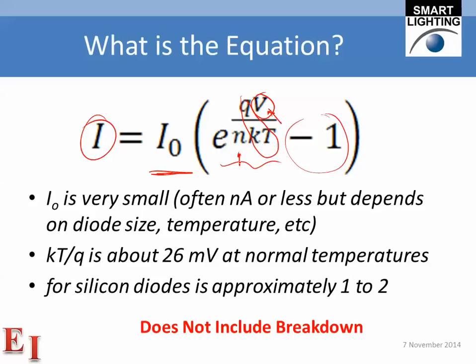The ideality factor n depends on the material; for silicon diodes it's approximately 1 to 2. Normally when you make a measurement of the current-voltage relationship in experiment 8, you fit this curve — finding the values of I_s and n that make the curve closely match your measurements — and usually that's pretty much all you have to do unless some other physics is showing up.